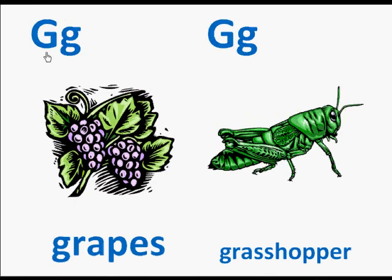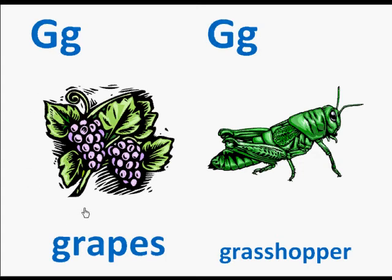Here we have the capital G, the small letter G, a picture of grapes. Here's the word grapes. The letter G makes the sound guh. So we'll read this page: G, grapes, guh guh guh.